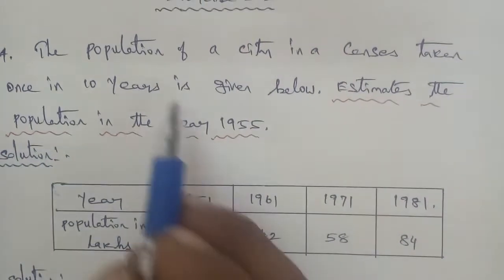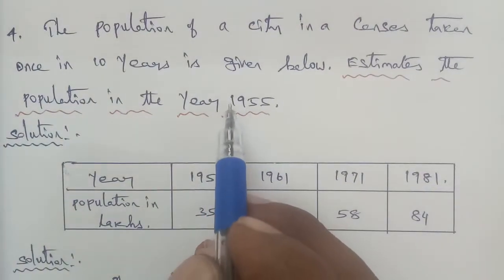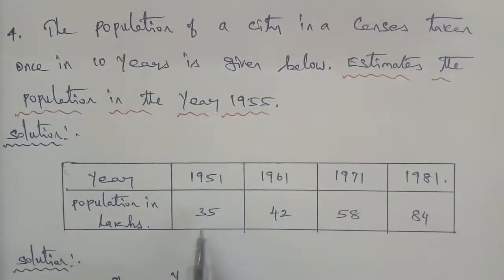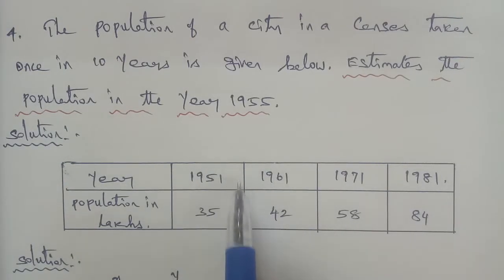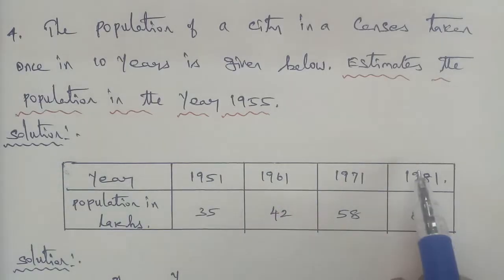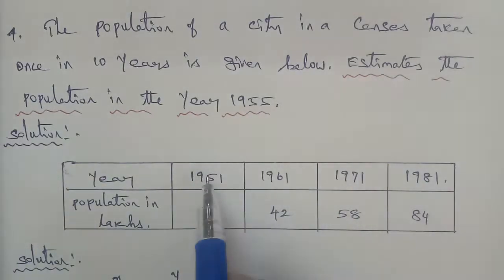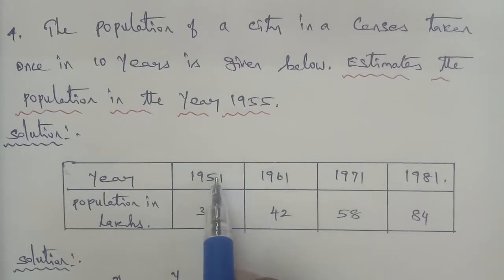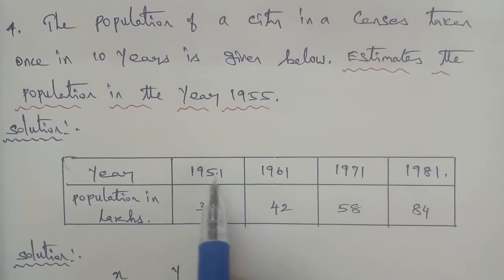Since we need to estimate the population for 1955, which falls between 1951 and 1961, we apply Newton's Forward Interpolation formula. The year 1955 is ahead of the starting value 1951, so we use the forward formula.